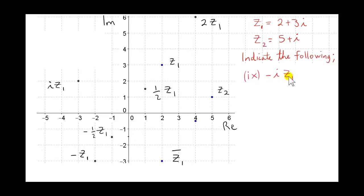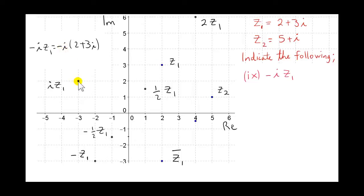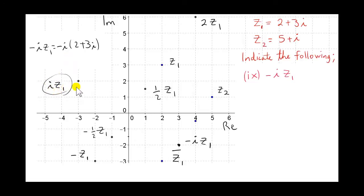Next we look at minus i times z1. We've already seen that i times z1 rotated z1 to minus 3 plus 2i — 90 degrees anti-clockwise about the origin. Multiplying by minus i is like then taking the image under central symmetry in the origin: minus 3 becomes plus 3 and plus 2 becomes minus 2, giving us the point 3 minus 2i.